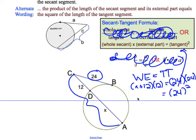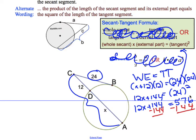So on this side, we have 12X plus 144. Then we do 24 times 24, which equals 576. We have 12X plus 144 equals 576. We're going to subtract 144 from both sides, and we get 432.